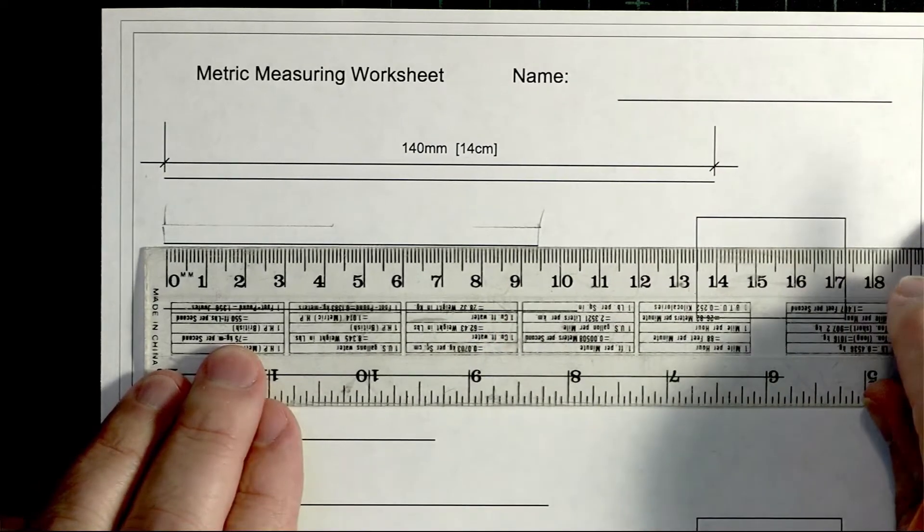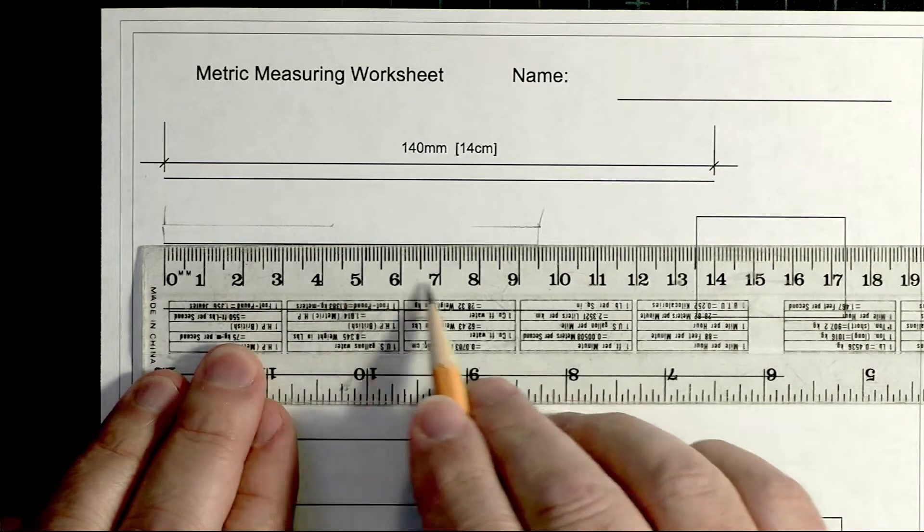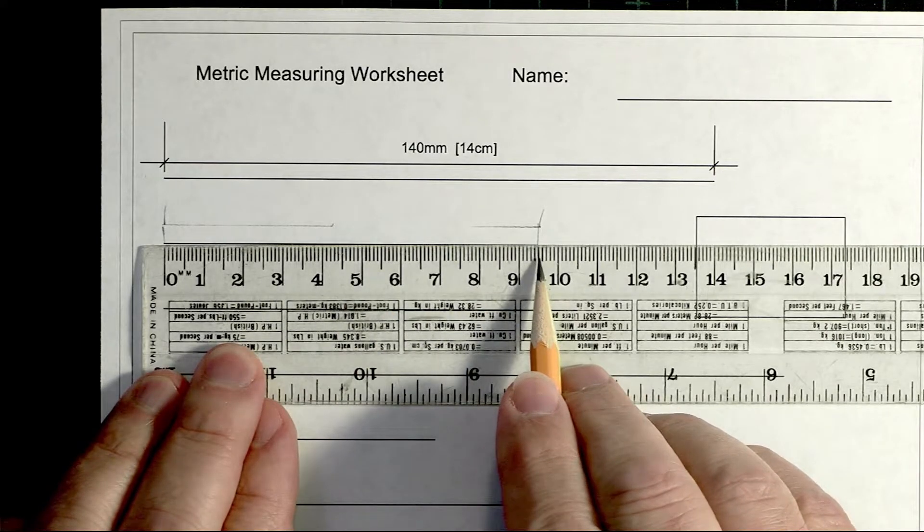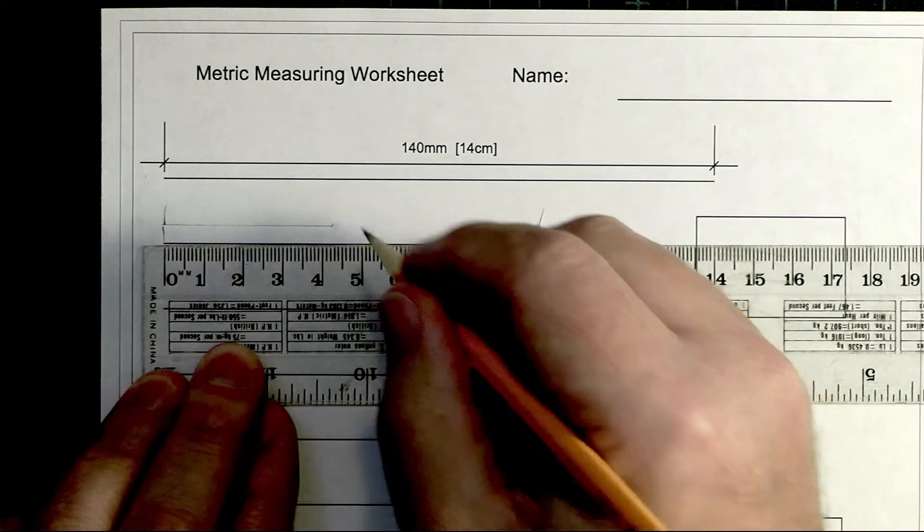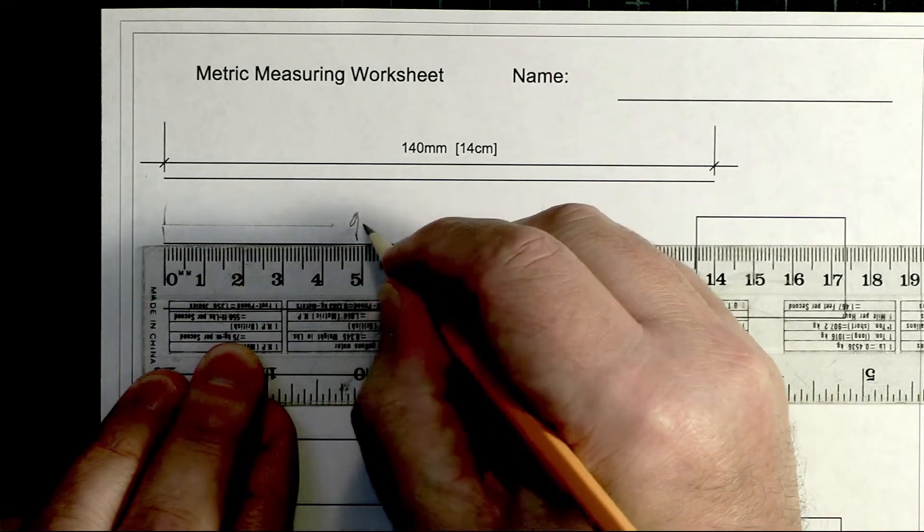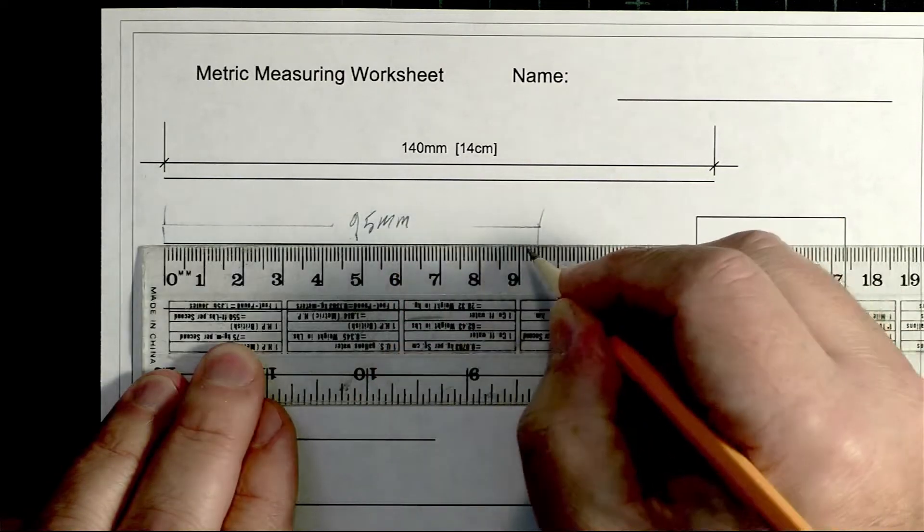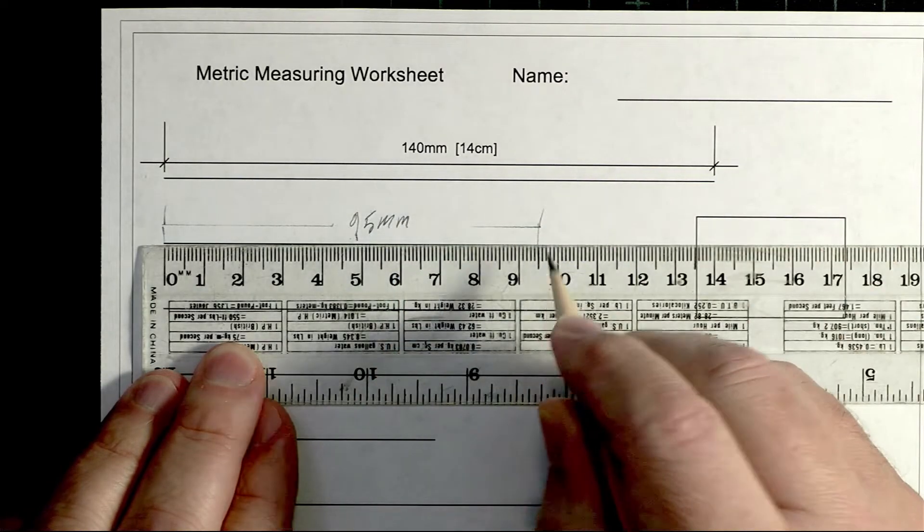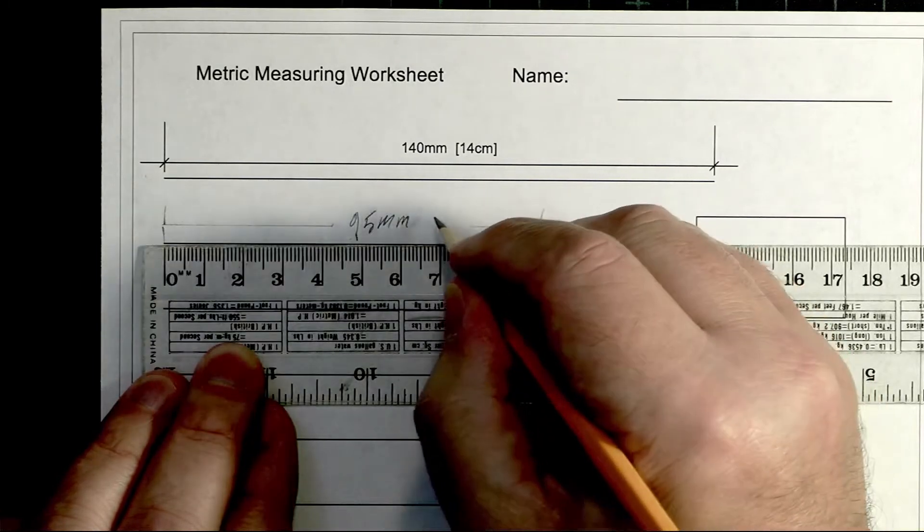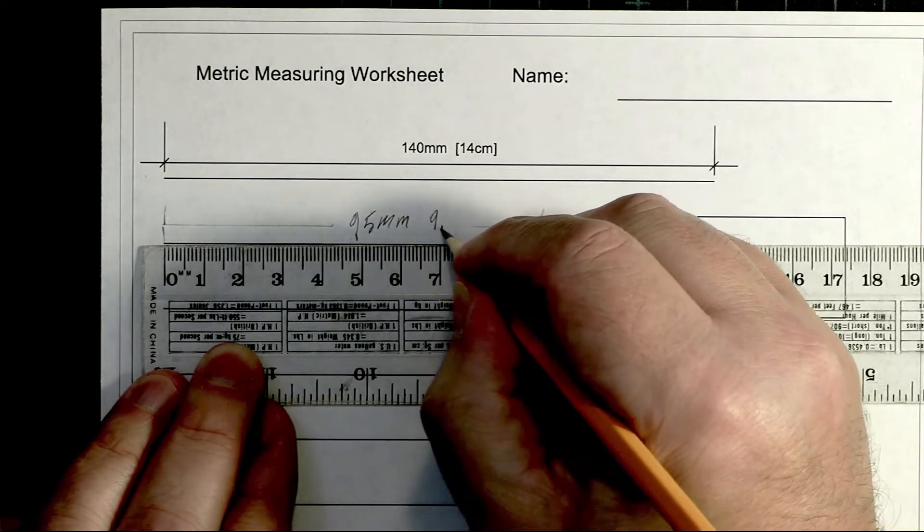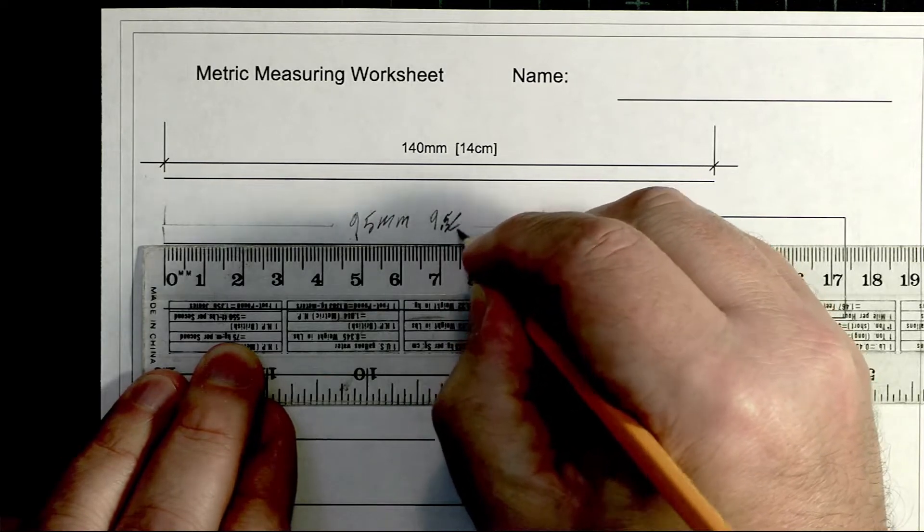Okay, so now I'll measure it: zero, one, two, three, all the way up to nine and a half centimeters. So this one is 95 millimeters, or 9.5 centimeters.